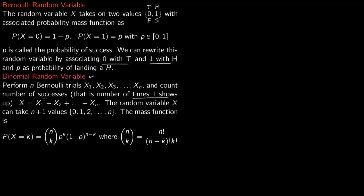For example, if x1 is 1, x2 is 0, x3 is 1, and everything else is 0, you add the two 1s and get 2. This random variable x can take n plus 1 values: 0 (all trials are 0), 1 (exactly one trial is 1), 2 (exactly two trials are 1), and so on up to n. Therefore you have n plus 1 values.